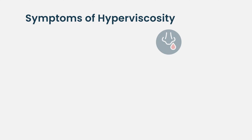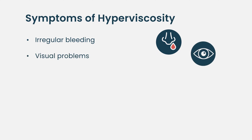Hyperviscosity is bad because it affects circulation and patients develop symptoms that point towards interference with the flow of blood. The more common symptoms are some kind of bleeding — these patients tend to have bleeding from the nose or gums. The second common symptom is related to the flow of blood in the retina or eye; these patients can have visual blurring and floaters.